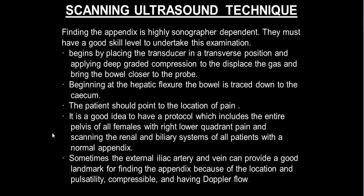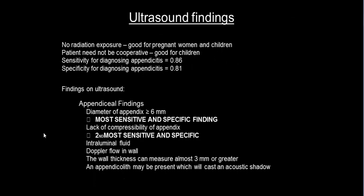The external iliac artery and vein can provide a good landmark for finding the appendix due to their location and visibility with Doppler flow. Advantages of ultrasound include no radiation exposure, making it good for pregnant women and children. Patient cooperation is not required, which is another advantage for pediatric patients.